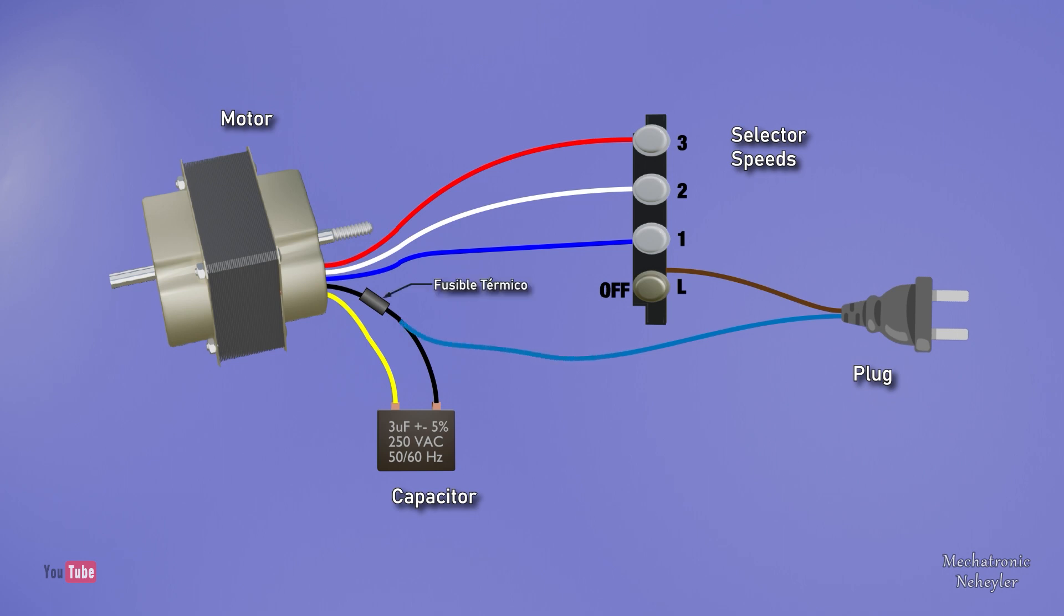Usually a small thermal fuse is connected to the black wire which protects the electric motor winding. In other fan models, the color of the cables may vary, therefore the connection also changes. Be careful with that.